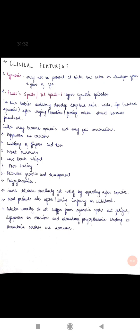Most patients die during infancy or childhood. Adults usually do not suffer from cyanotic spells, but fatigue, dyspnea on exertion, and secondary polycythemia may occur, which can lead to thrombotic strokes. In cases of acquired TOF, adults may have these symptoms — fatigue, dyspnea, polycythemia — but without the cyanotic spells.